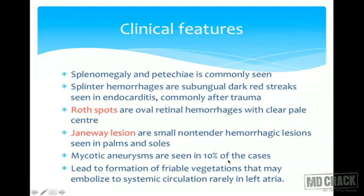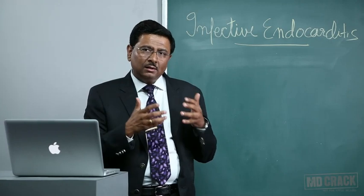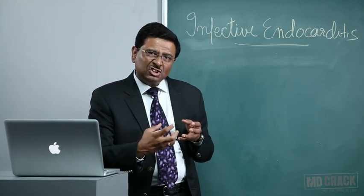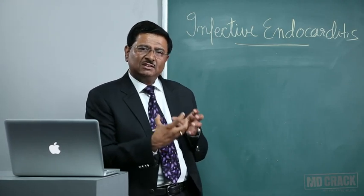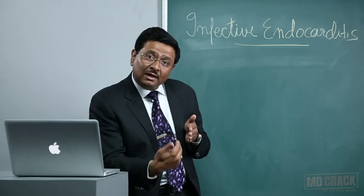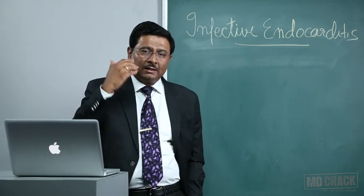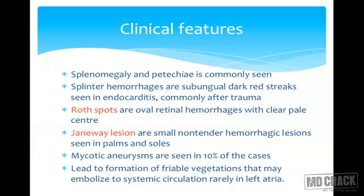Mycotic aneurysms are seen in around 10% of cases. Vegetations may embolize to the systemic circulation, but rarely back into the left atria. This is important because some MCQs incorrectly list the left atrium as a destination — in mitral valve involvement, forward flow means vegetations go into the systemic circulation, not back into the atrium.